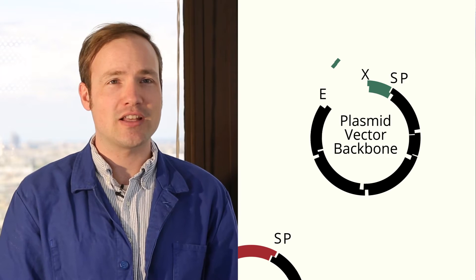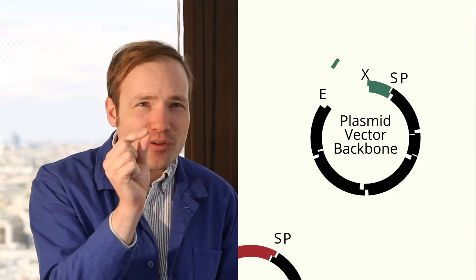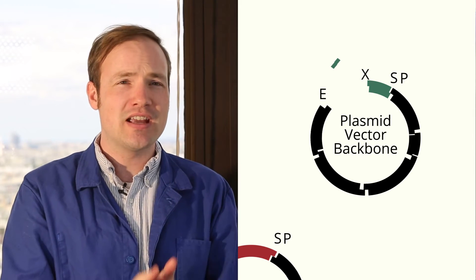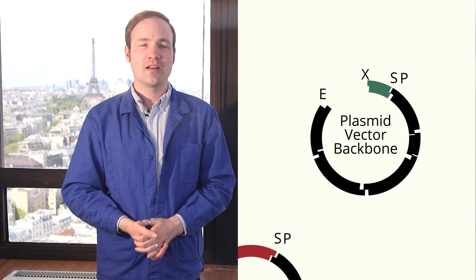After we digest the plasmid, we'll normally clean up the DNA with a purification column. This tiny little piece of DNA in between the EcoR1 and the XbaI sites is too small to bind to that column, so it just gets washed away.